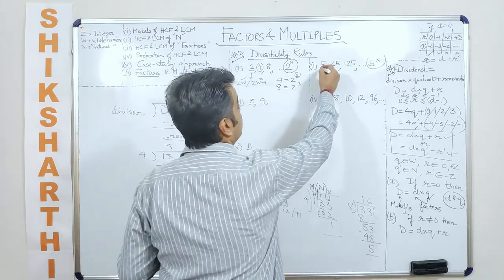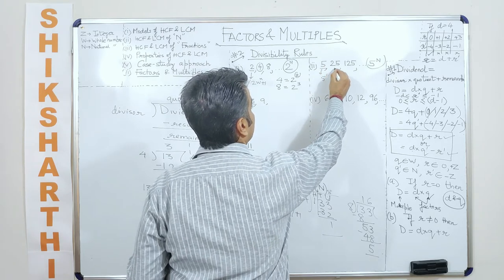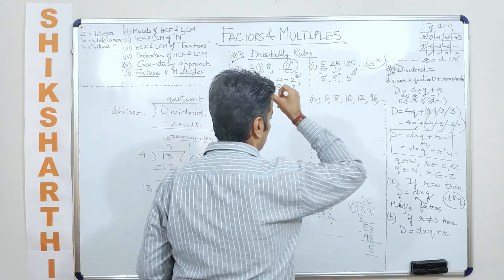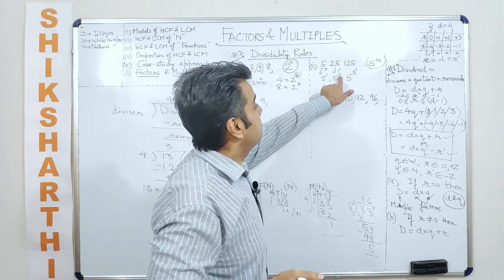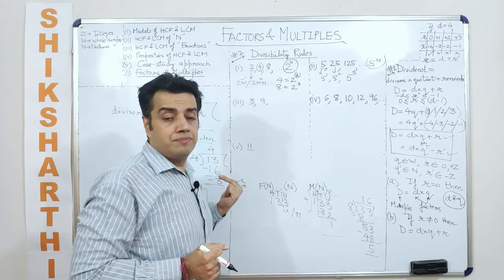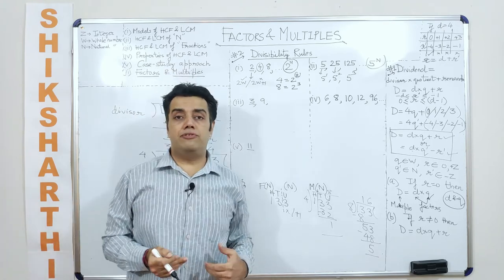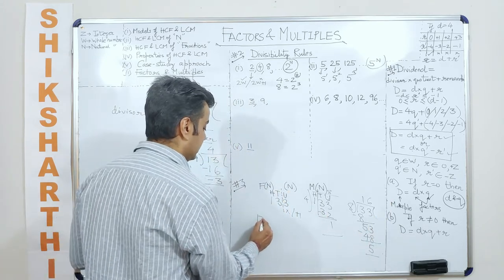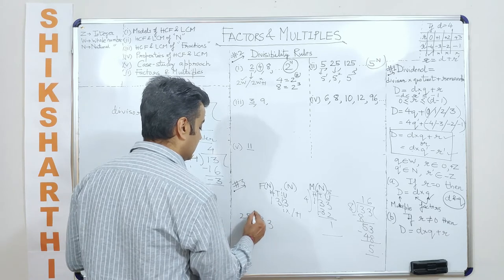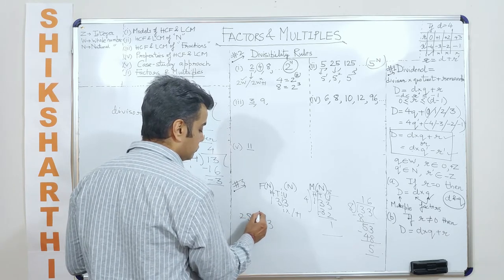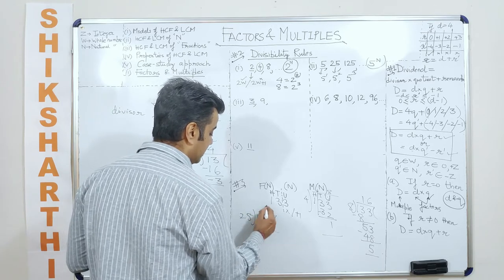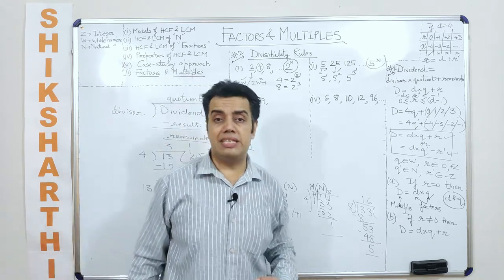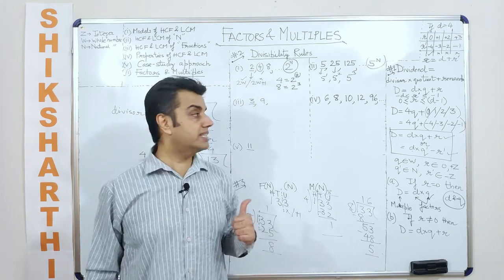The same logic applies to powers of 5: 5 = 5¹, 25 = 5², 125 = 5³. The divisibility rule for 5ⁿ (where n is a natural number) is to check the last n digits. For example, to check if 133 is divisible by 25, since 25 = 5², check the last two digits: divide 33 by 25 — not divisible, remainder is 8.